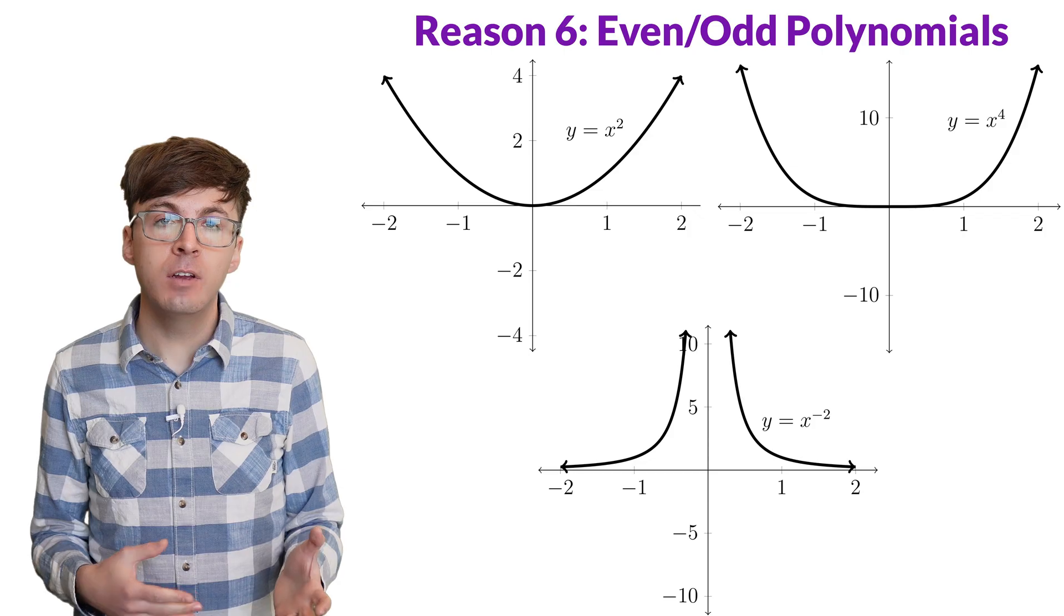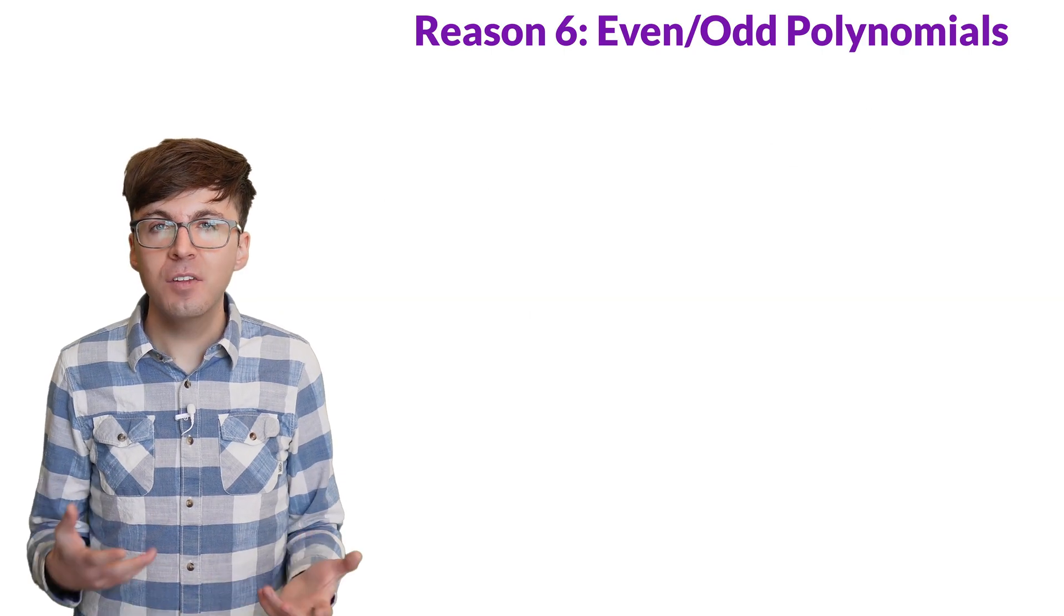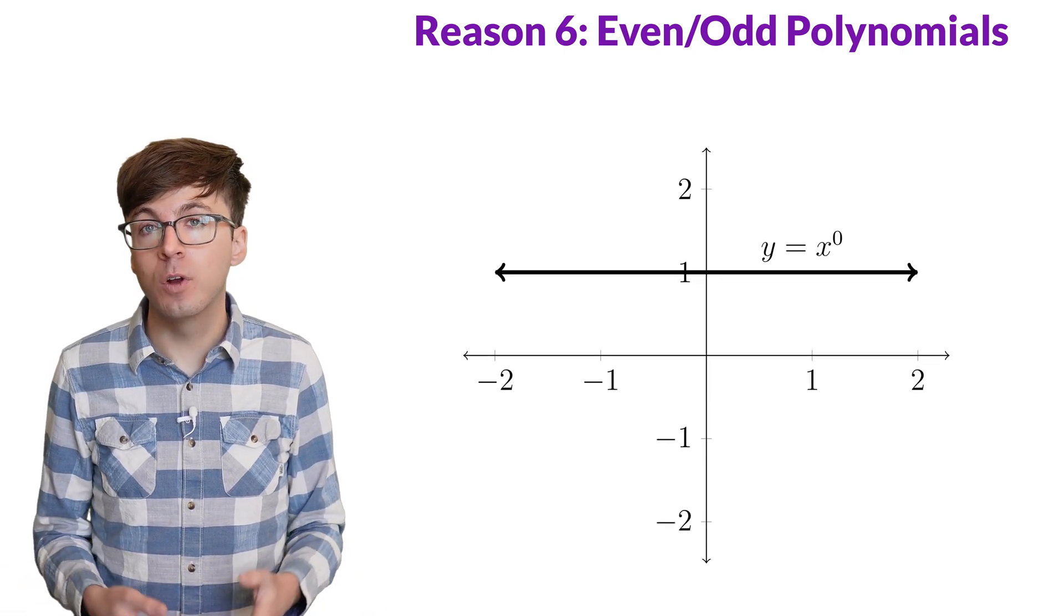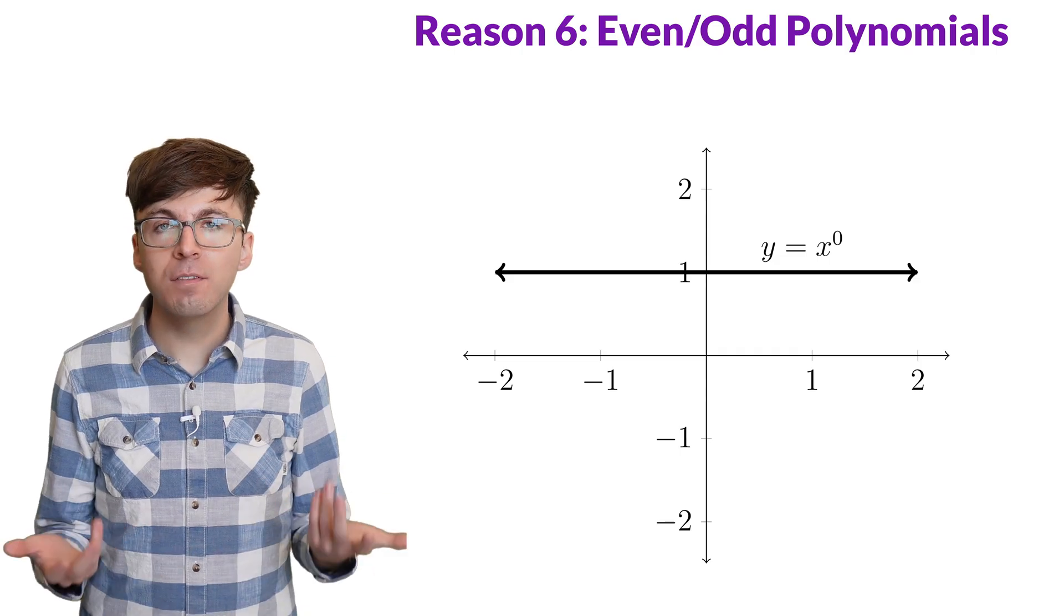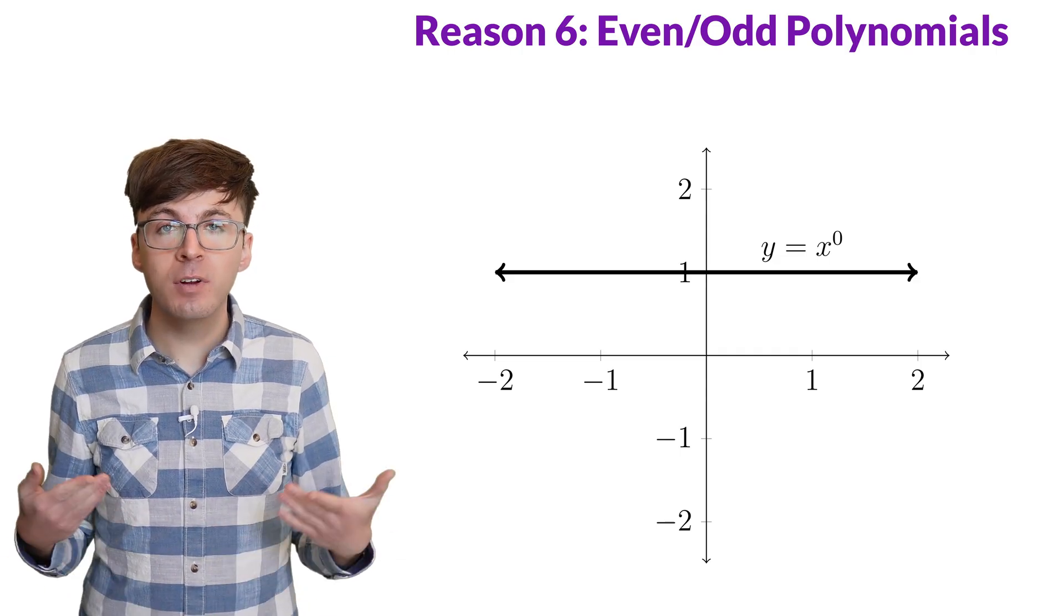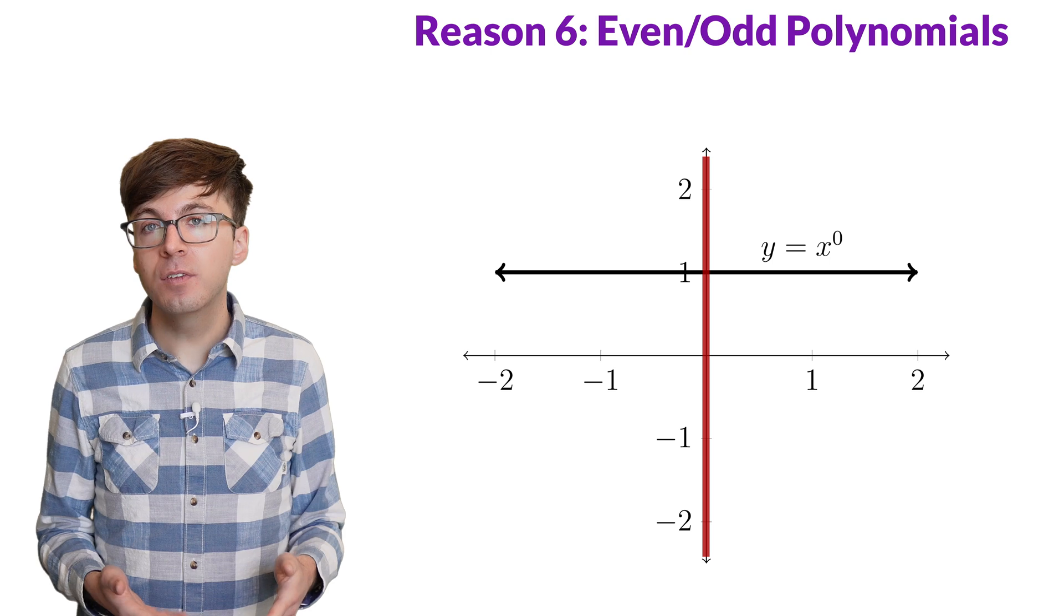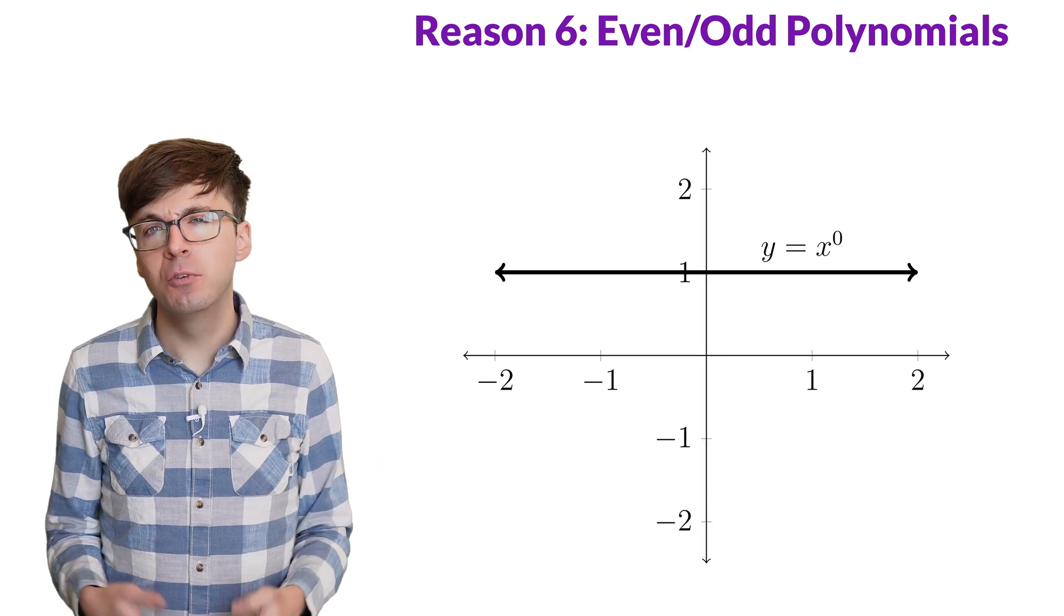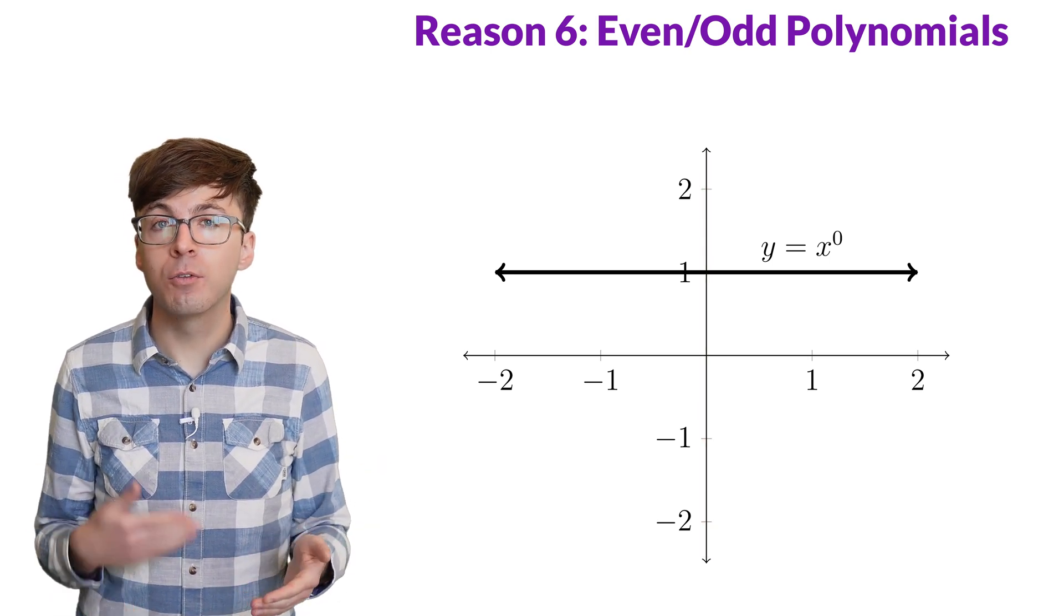So what about y equals x to the 0? Does this graph have the even or odd symmetry? x to the 0 is the empty product, which is 1. So its graph looks like this. It's symmetric about the y-axis, so this function is even. To avoid breaking the pattern, 0 should be even.